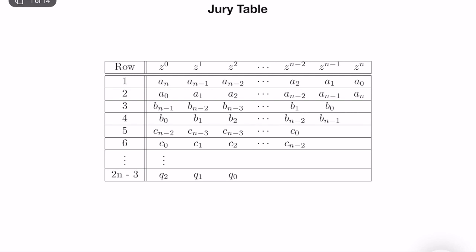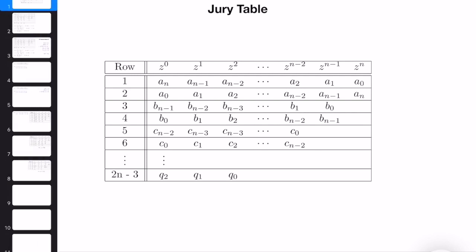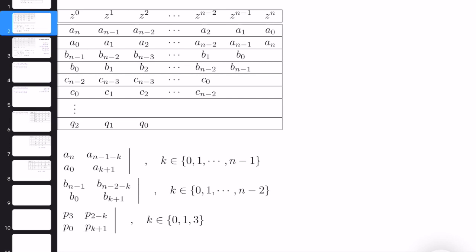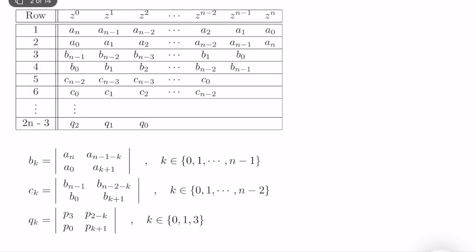The computation is not that hard. These are the formulas to compute bk, ck, qk. The index k runs from 0 to n-1 for b, and from 0 to n-2 for c, and so on. Instead of just looking at the formula, I will show you how to compute this using the table.